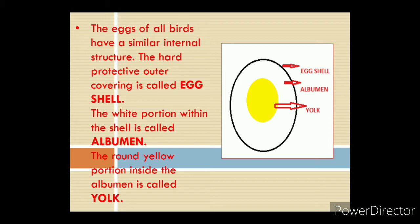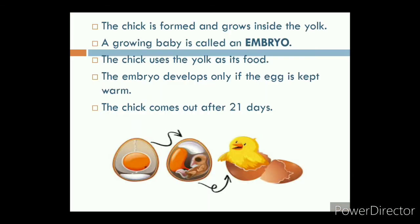Let us see the structure of the egg in detail. The hard protective outer covering is called the egg shell. The white portion within the shell is called albumen. The round yellow portion inside the albumen is called yolk. The chick is formed and grows inside the yolk. A growing baby is called an embryo. The chick uses the yolk as its food. The embryo develops only if the egg is kept warm. Here is the picture showing how the egg develops into a chick. The chick comes out after 21 days.